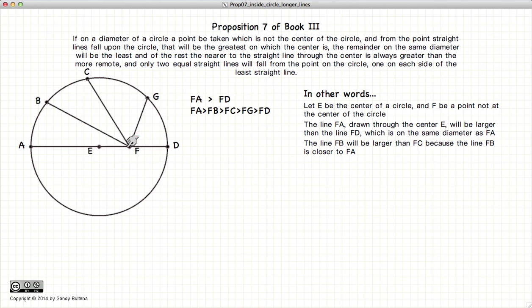Next, if we have lines from F going to the circumference of the circle, the lines that are closer to the center of the circle will be larger. In other words, BF is closer to the center than CF, so BF is larger than CF and CF is larger than GF.